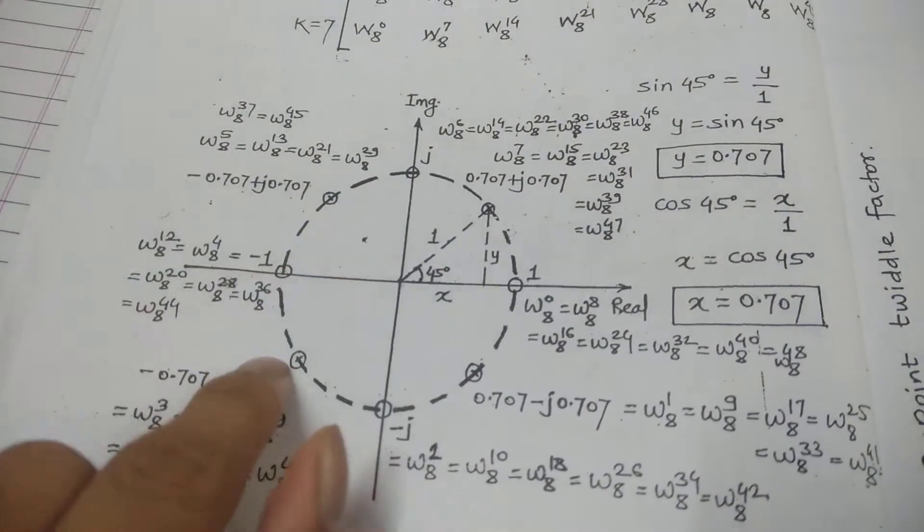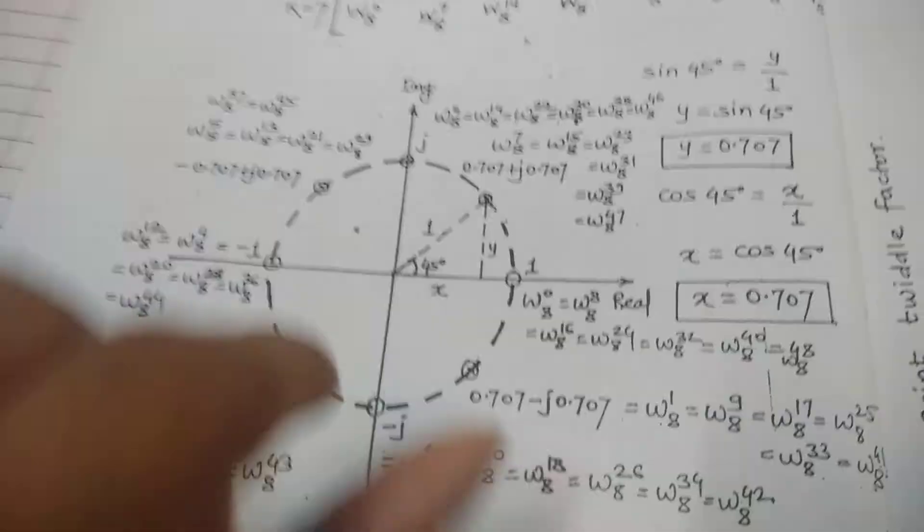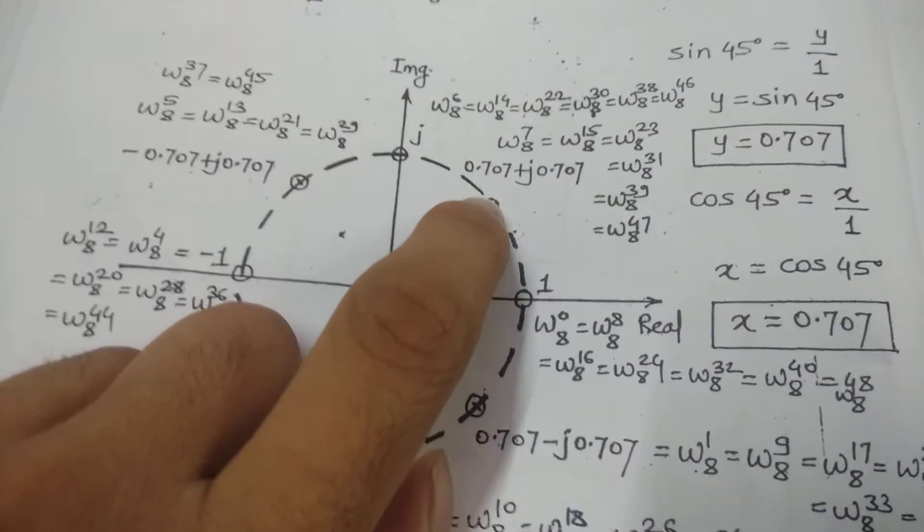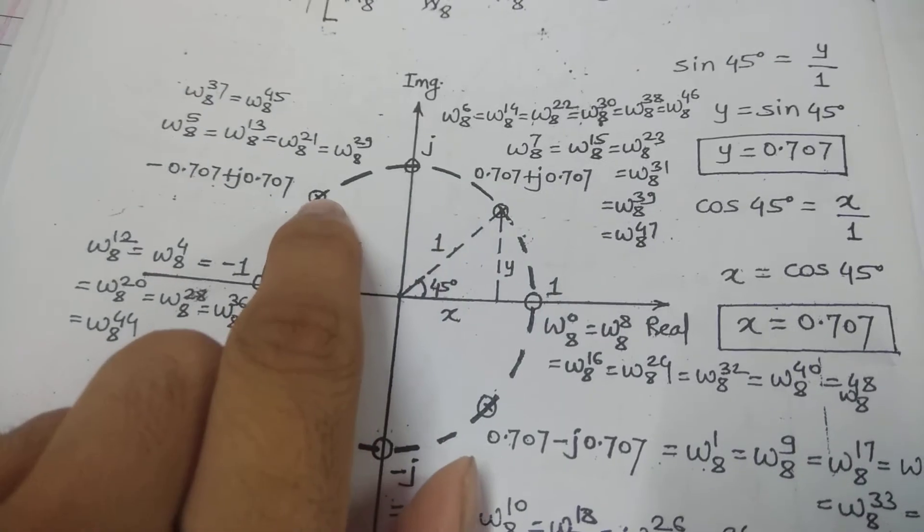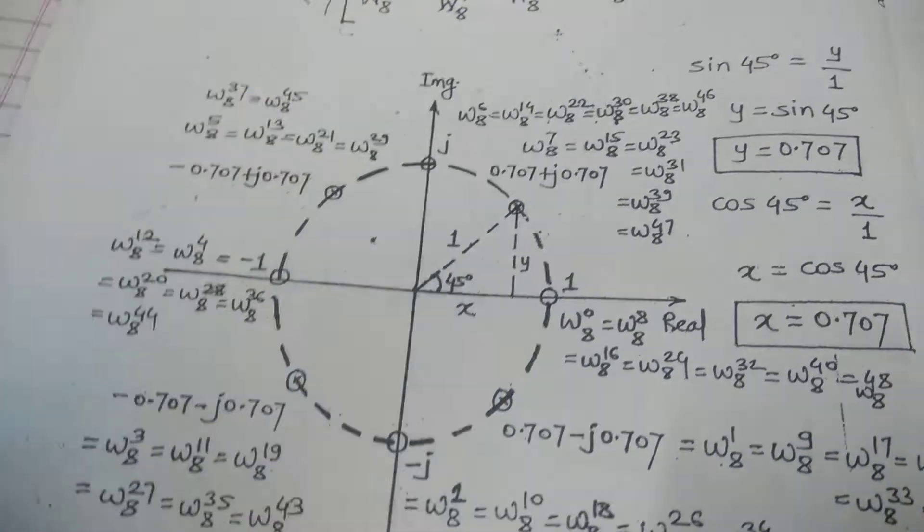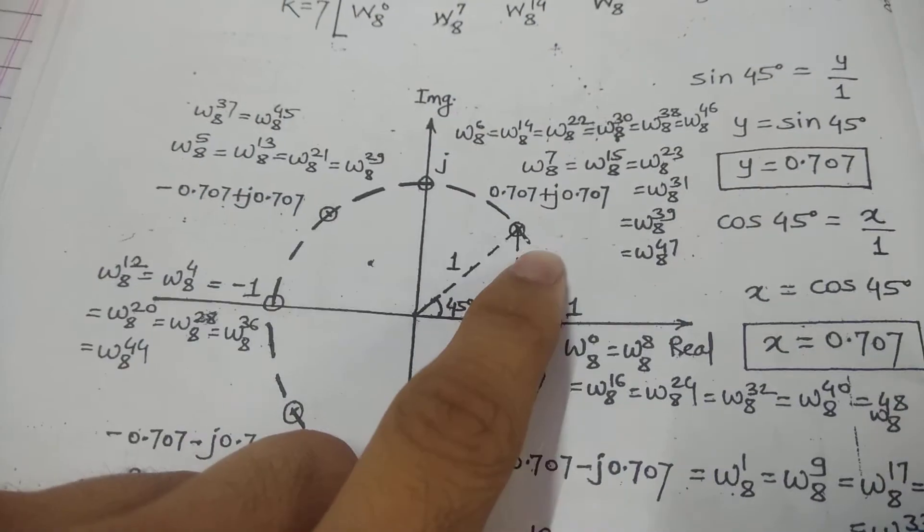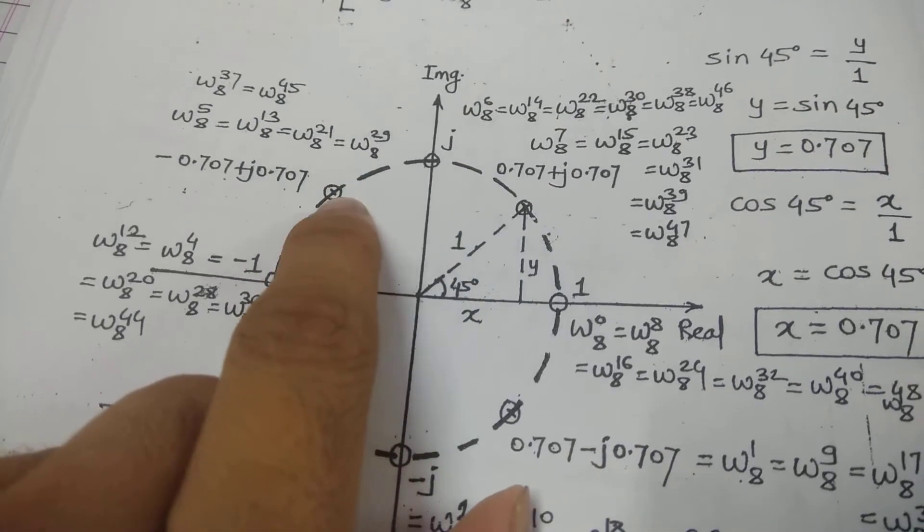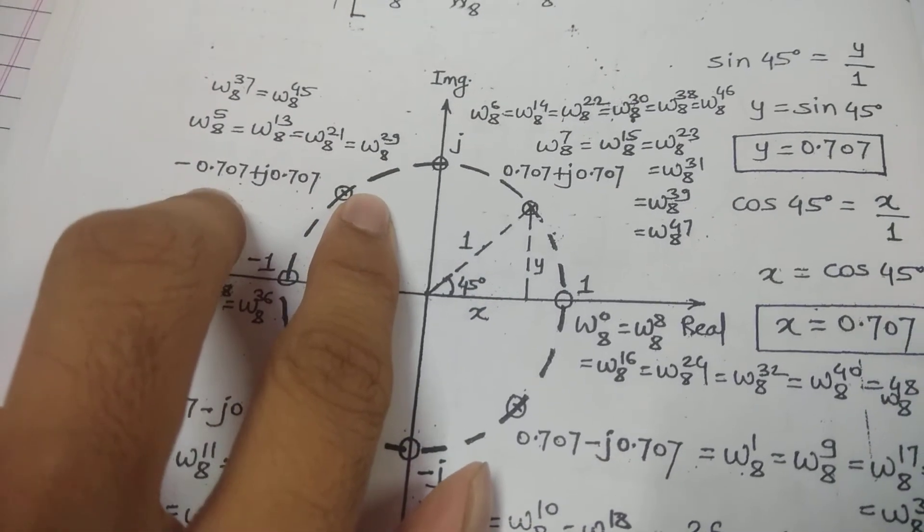After getting this point, you can mark the other eight points in the circle. Similarly, if you mark this point and see this point, you will just have a difference of minus because it is in the second quadrant.